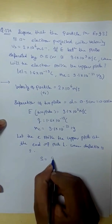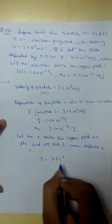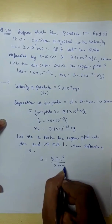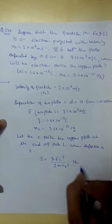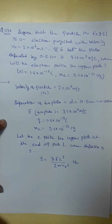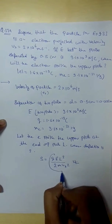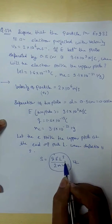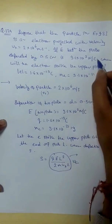S will be equal to Q E L square over 2 M V X square. This we got from the previous. We have to refer to the previous video or the previous question because it has already said that we refer to the previous question.